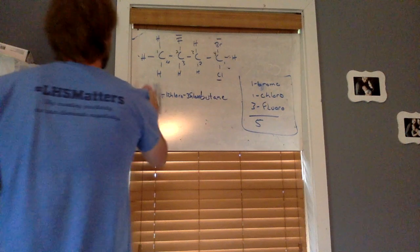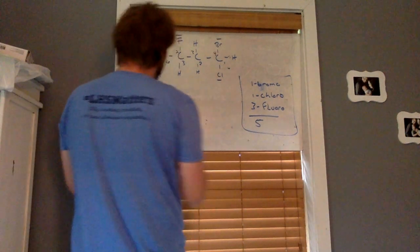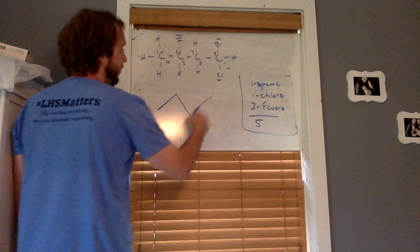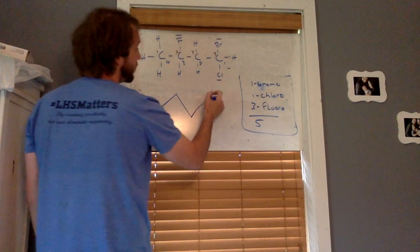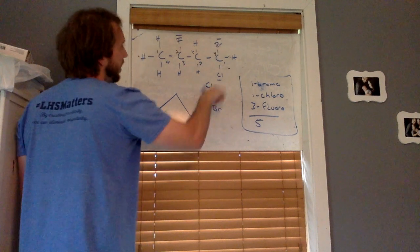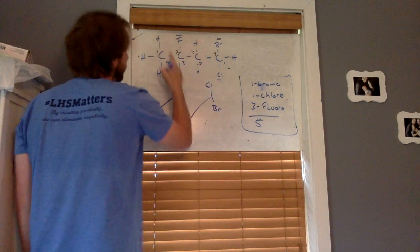If we want to draw the skeletal form for this, we got a butane which is a four carbon group, one two three four. We said we'd have a chlorine and a bromine coming off of the first carbon, and then coming off the third we've got a fluorine.